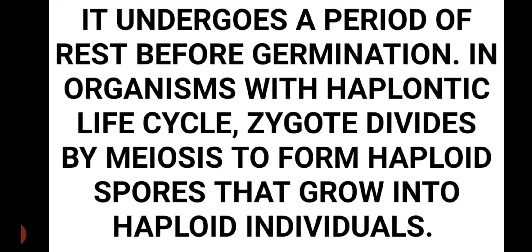In organisms with a haplontic life cycle, where the main body is haploid, the zygote divides by meiosis. By this reduction division it forms a haploid spore that grows and forms the haploid individual. So the diploid zygote converts into a haploid spore, which then starts germination.